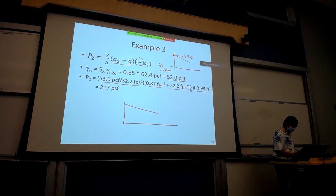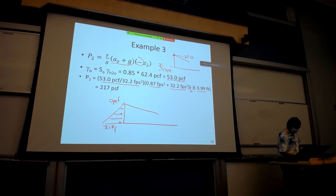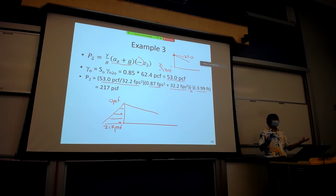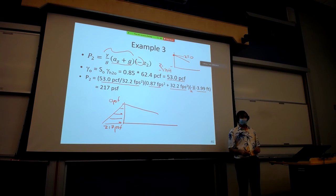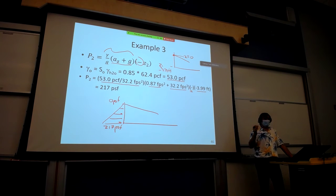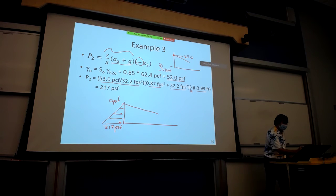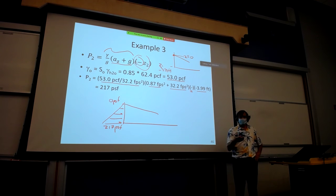The pressure distribution is linear because γ, AZ, g, and AX are all constants as you move through the fluid. The only thing changing as you move along that left side is Z. That's why you have a linear pressure distribution. To convert that into a force on the left-hand side, we use the pressure at the center of the area times the area.